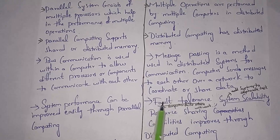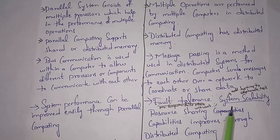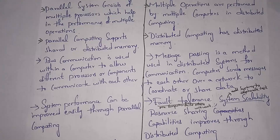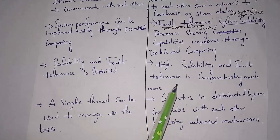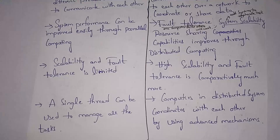In parallel computing, having multiple processors inside a single system improves performance. In distributed computing, fault tolerance is improved — even if one computer fails, remaining computers work — along with system scalability, where we can add or remove systems based on need, and resource sharing like printers and scanners. Parallel computing has less scalability and fault tolerance, while distributed computing has high scalability and fault tolerance. In parallel computing a single computer manages all operations; in distributed computing all computers coordinate with each other using advanced mechanisms.